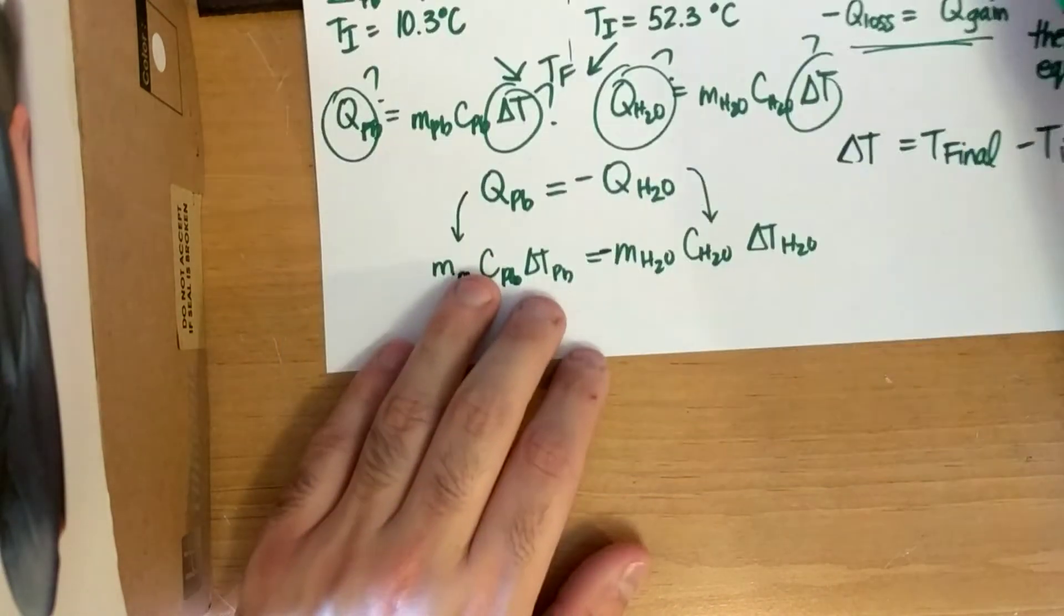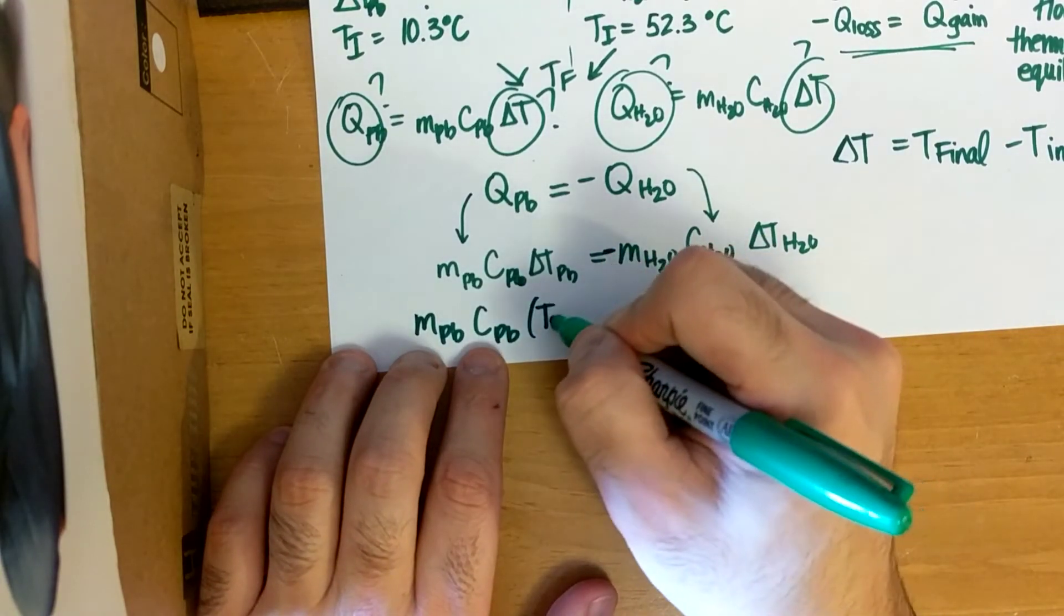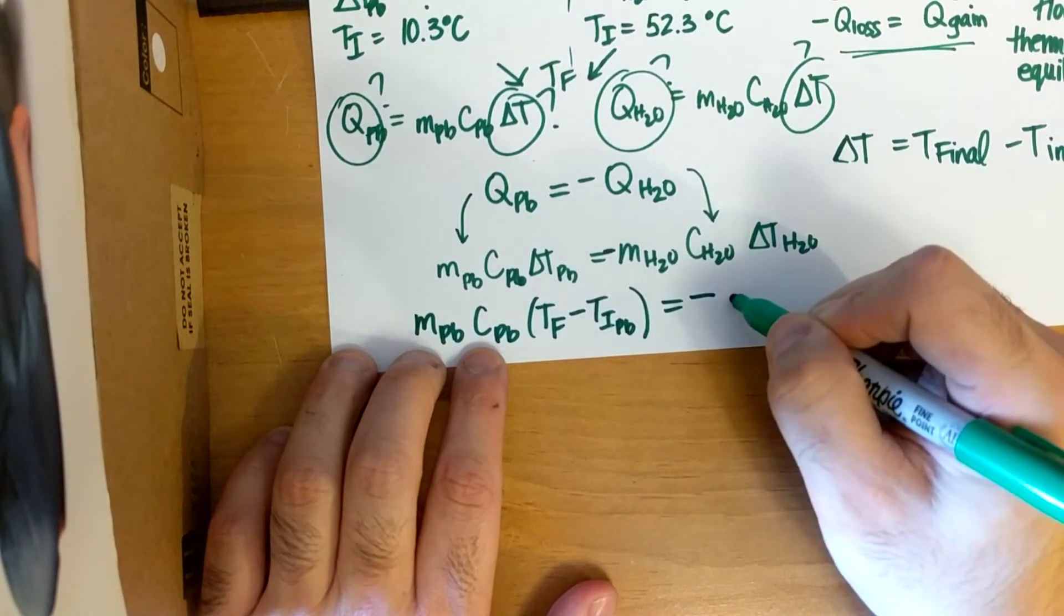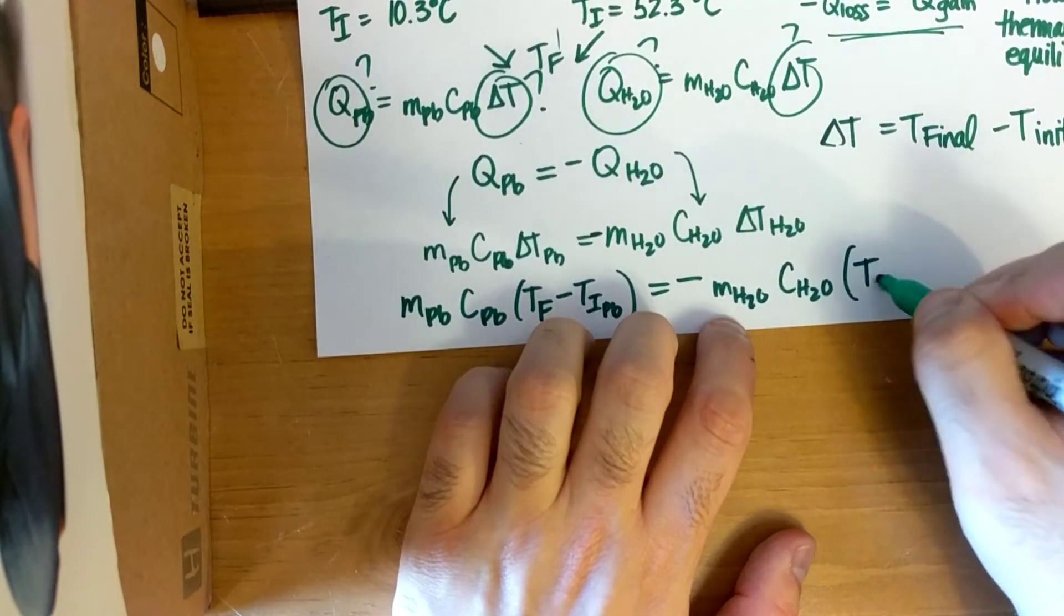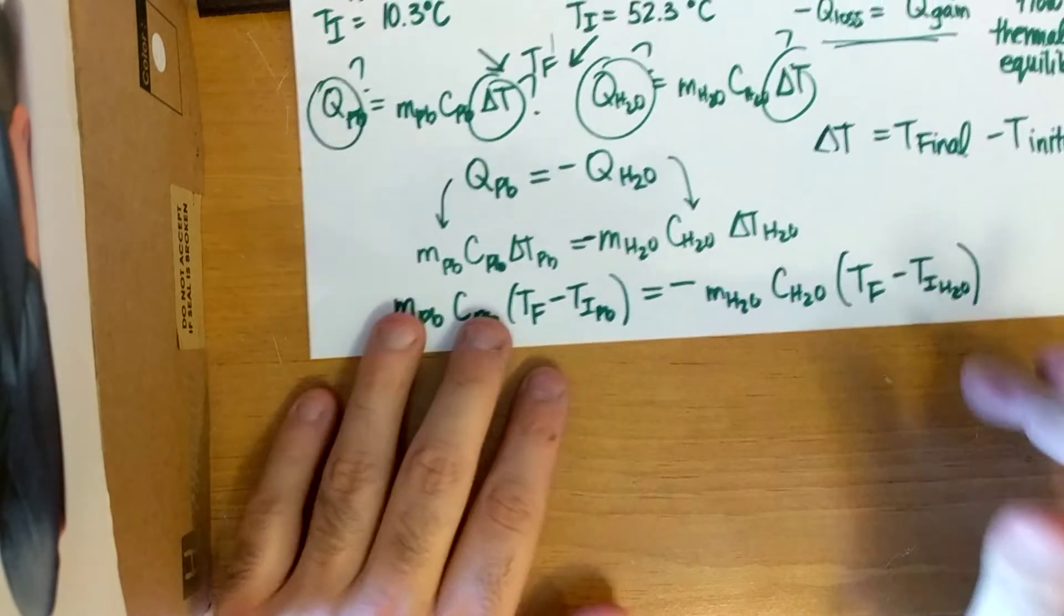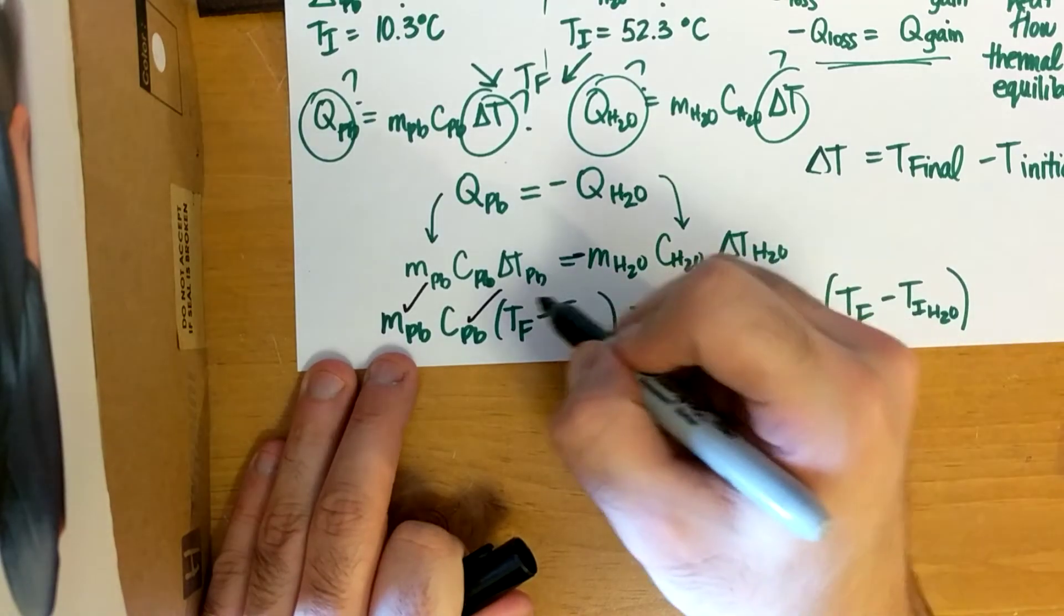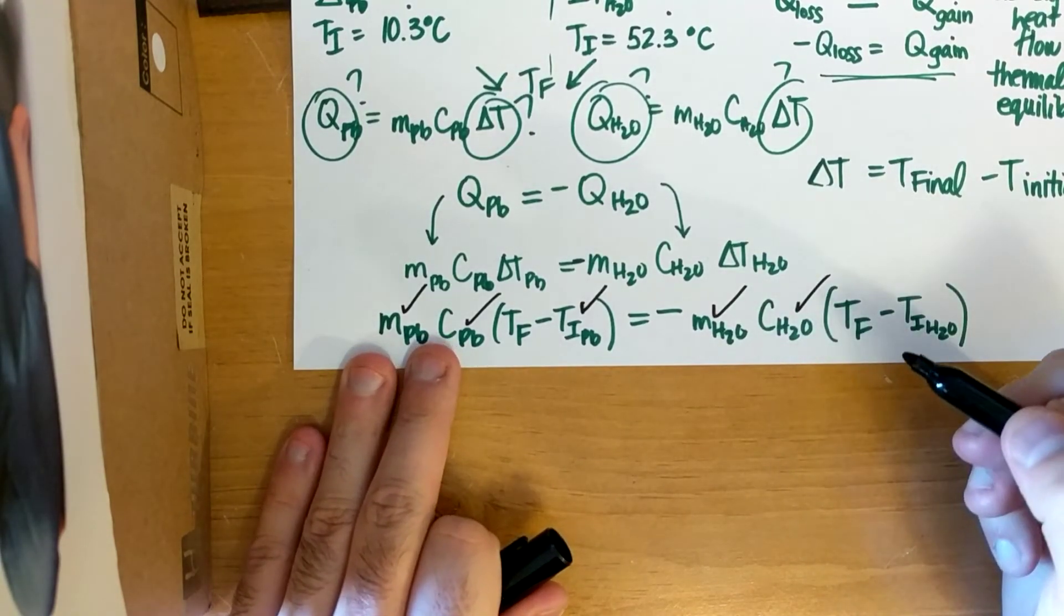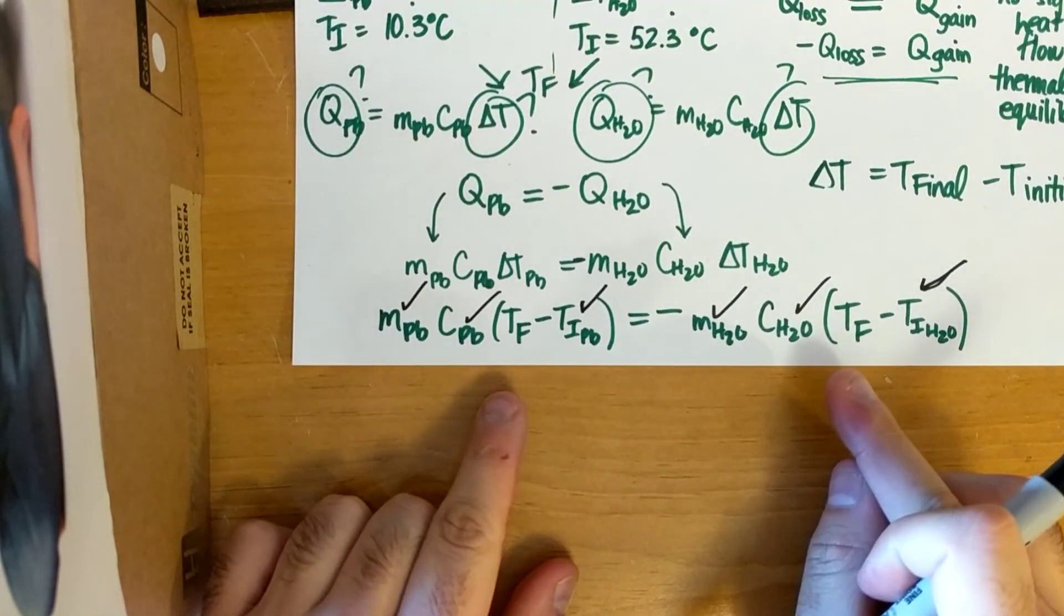So, I'm going to expand this even further and say that M lead, C lead, T final minus T initial lead equals negative M H2O, C H2O, T final minus T initial of H2O. And guess what values we have? We have the mass of lead. We have the specific heat capacity of lead. We have the initial temperature of lead. We have the mass of water. We have the specific heat capacity of water. And we have the initial temperature of water. What is the only value we don't have that is equal on both sides? The final temperature.